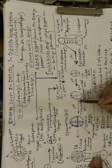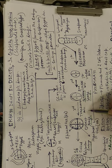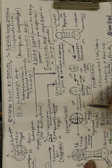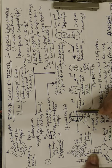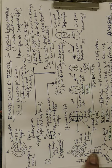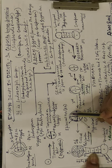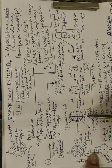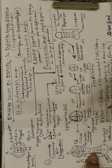Moving to the third division, which is transverse: if you imagine taking the four-celled quadrant and cutting it transversely once, you get eight portions. This is the octant stage. The octant stage has an upper epibasal tier towards the chalaza and a lower hypobasal tier towards the micropyle. I have marked them as EB and HB respectively in the diagram.